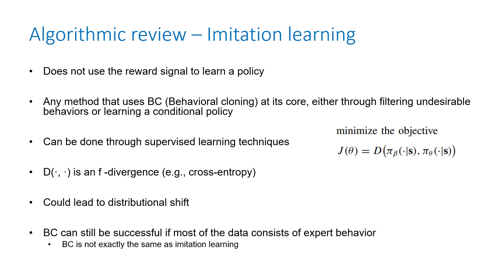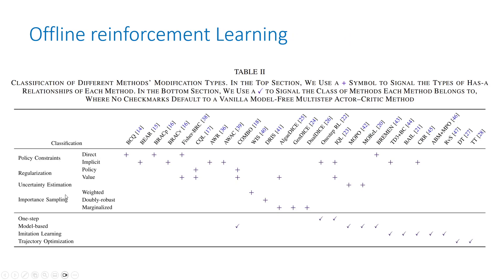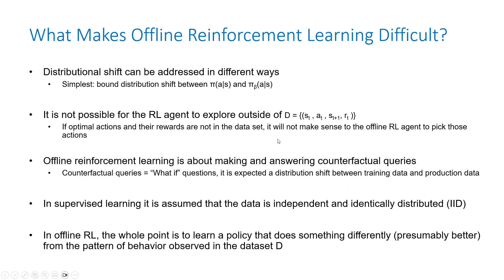Another offline RL category is imitation learning. It does not use the reward signal to learn a policy — at its core it is behavioral cloning, but you filter for good behaviors. This can be done through supervised learning techniques using an f-divergence or cross-entropy D function. Distributional shift can occur here too. Behavioral cloning is most successful when the data consists of expert behavior. Imitation learning also includes the data filtering step.